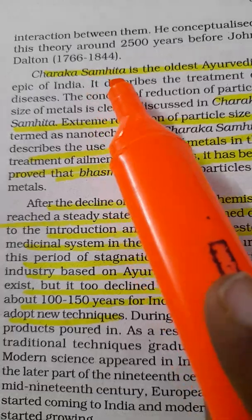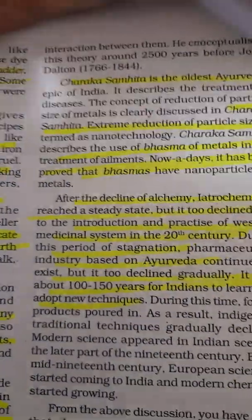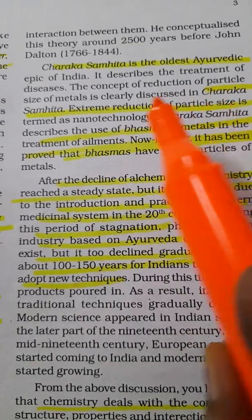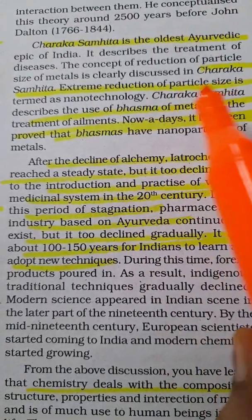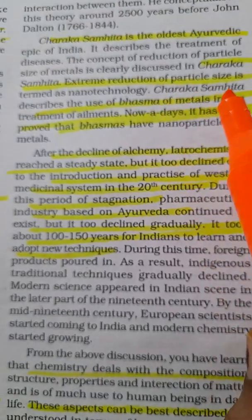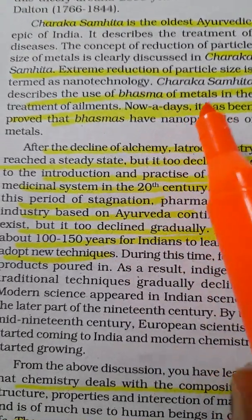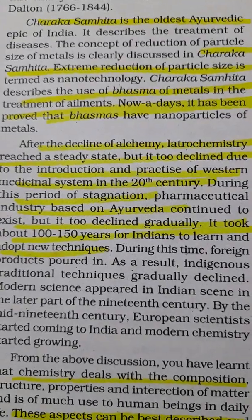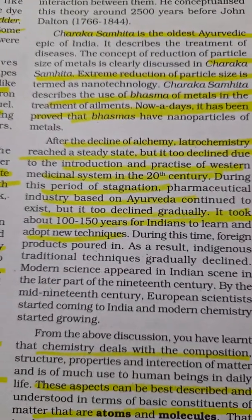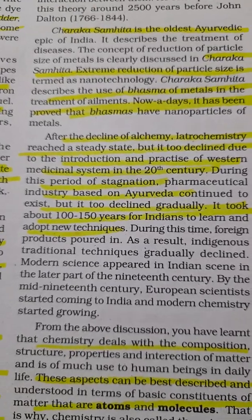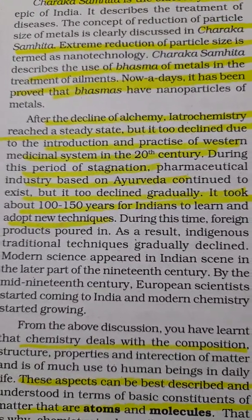Charaka Samhita, the oldest Ayurvedic epic of India describing the treatment of diseases, clearly discusses the concept of reduction of particle size of metals. Extreme reduction of particle size is termed nanotechnology. Charaka Samhita describes the use of bhasma of metals in the treatment of ailments, and modern research has now proved that bhasma contain nano particles of metals — confirming what was discovered in ancient times.